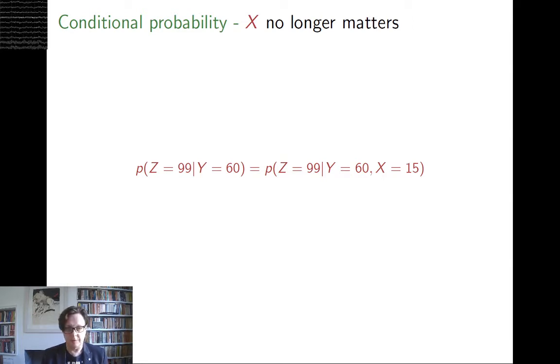So this is just writing the formula around what I just said. The probability of Z equals 99 given that Y is equal to 60 is the same as the probability that Z equals 99 given that Y equals 60 and X equals 15. Or it's the same as the probability that Z equals 99 given that Y equals 60 and X equals 10. So X and Z are dependent, but only in the absence of the knowledge of Y. Once you know Y, then X and Z become independent.